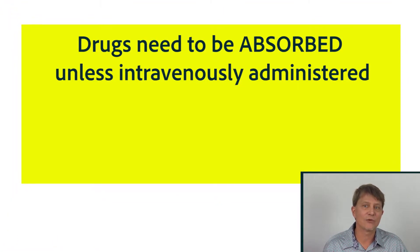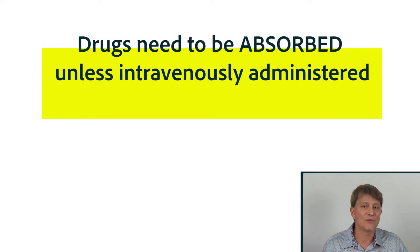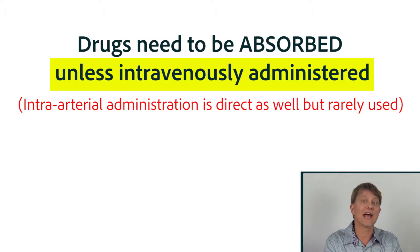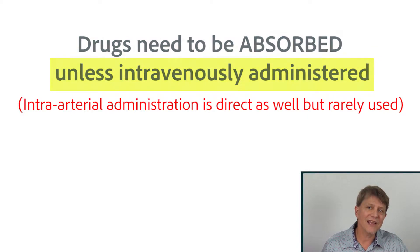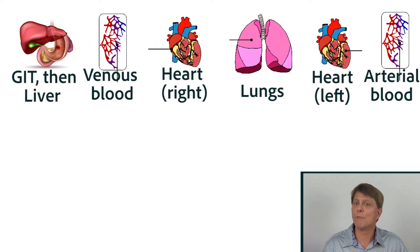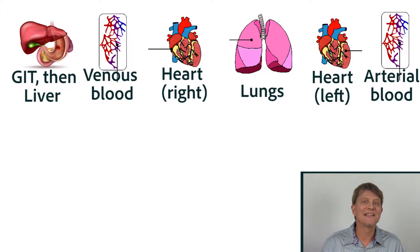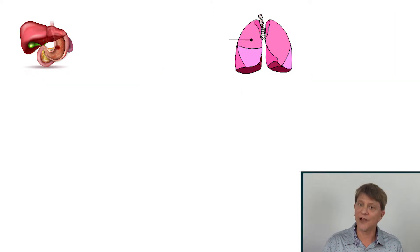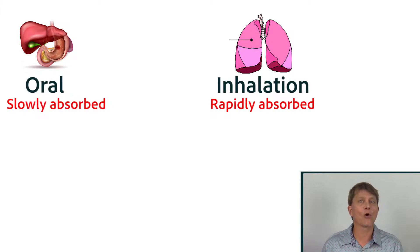In fact, the only administration that doesn't require absorption is intravenous administration, because that type of administration places the medication directly into the blood. One thing to note about those different modes of administration is that they are going to vary with respect to the amount of time the drug takes to get into systemic circulation, and therefore their peak concentration in the blood — their concentration max, or C-max — is going to vary as well.